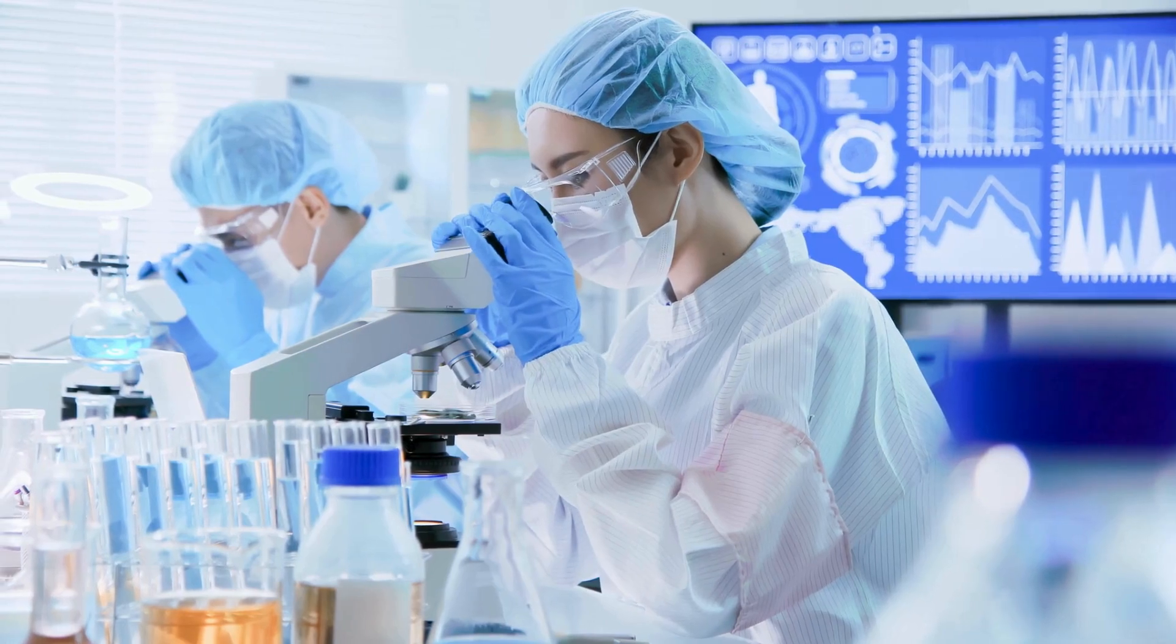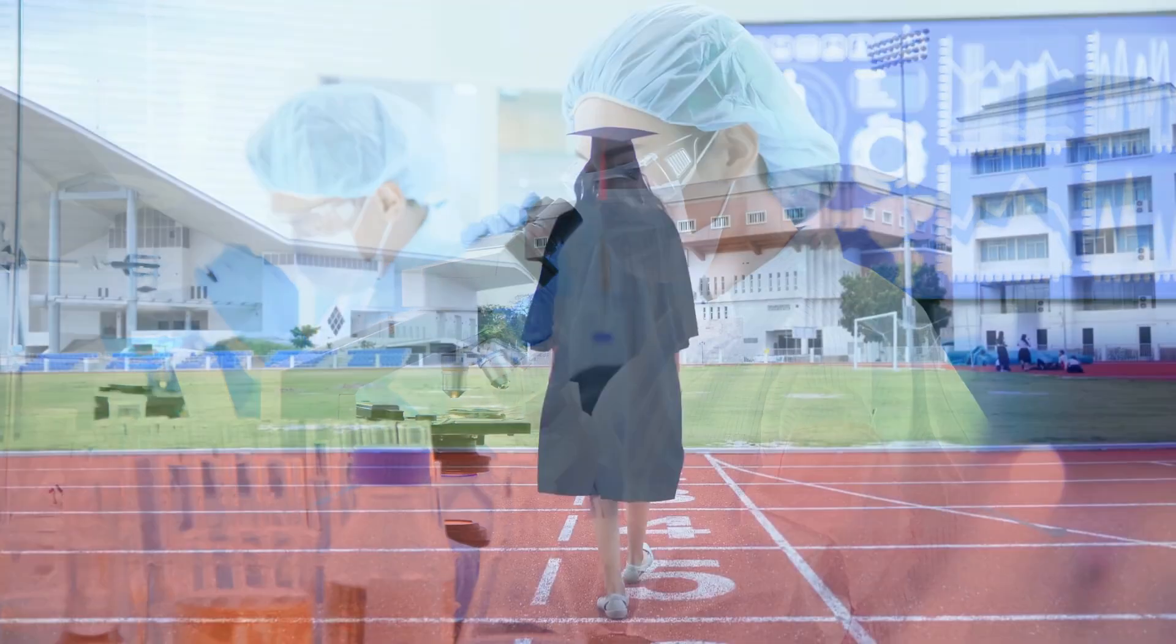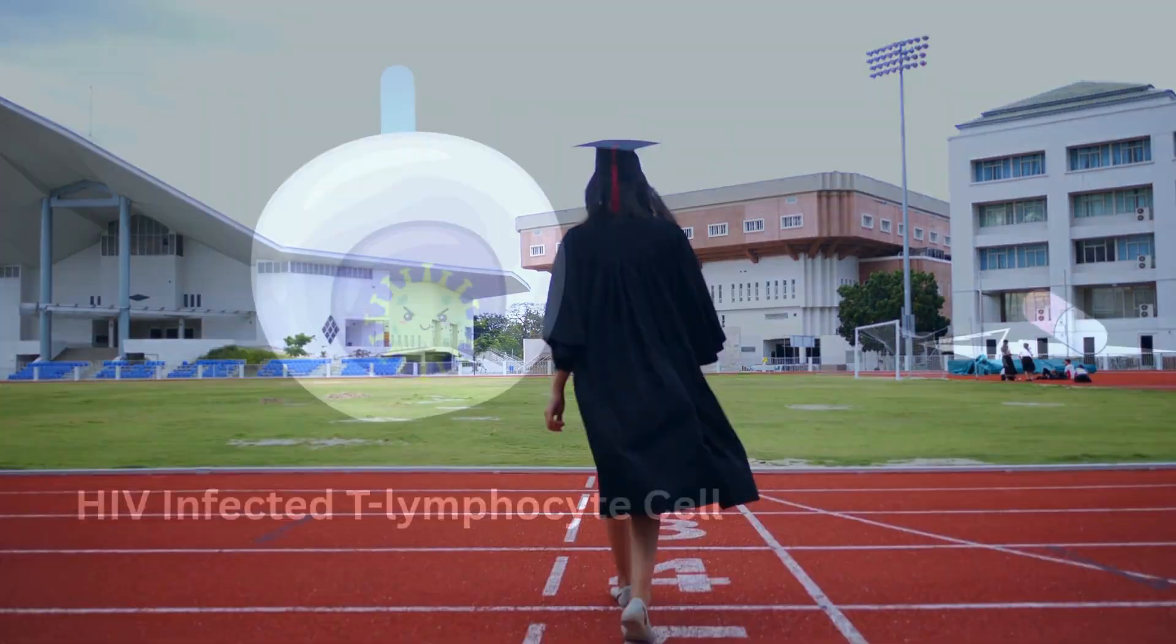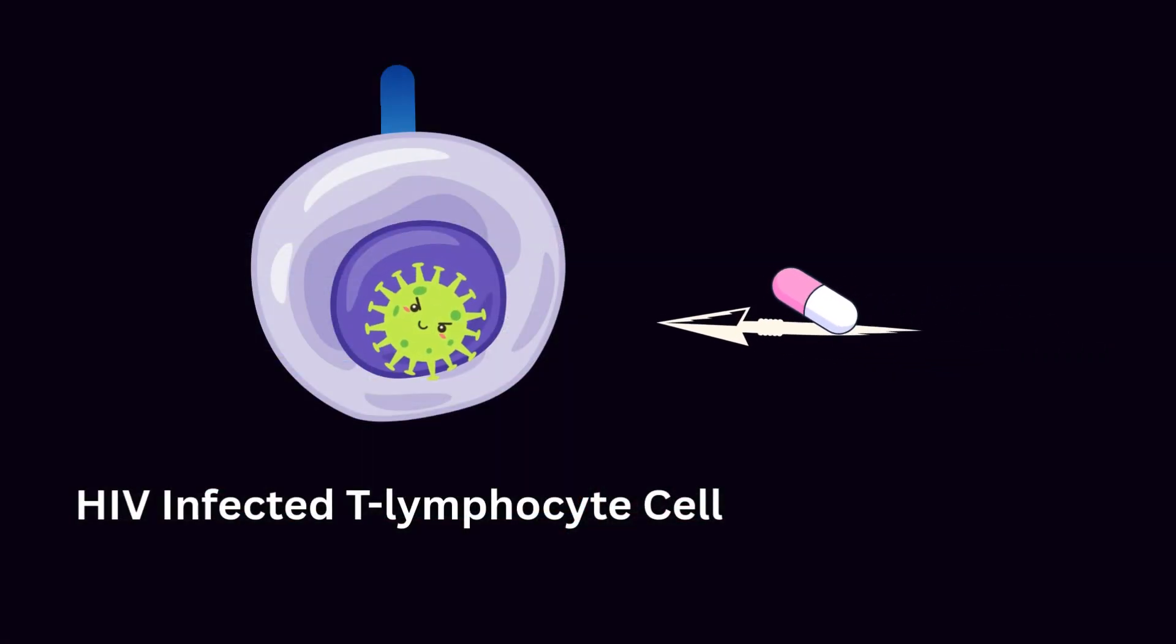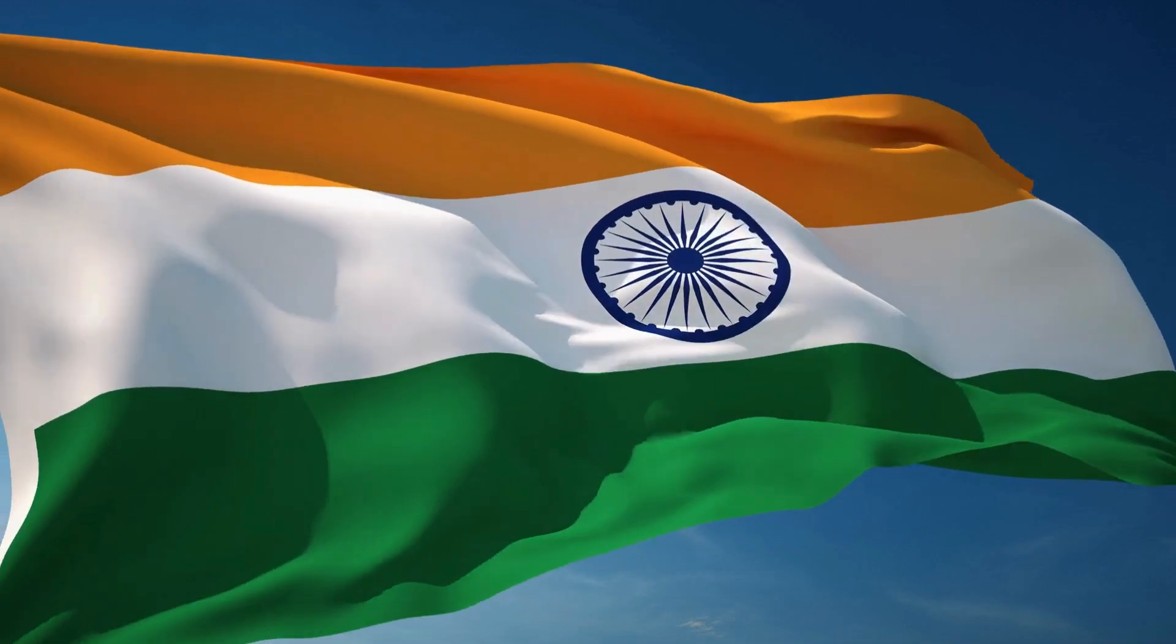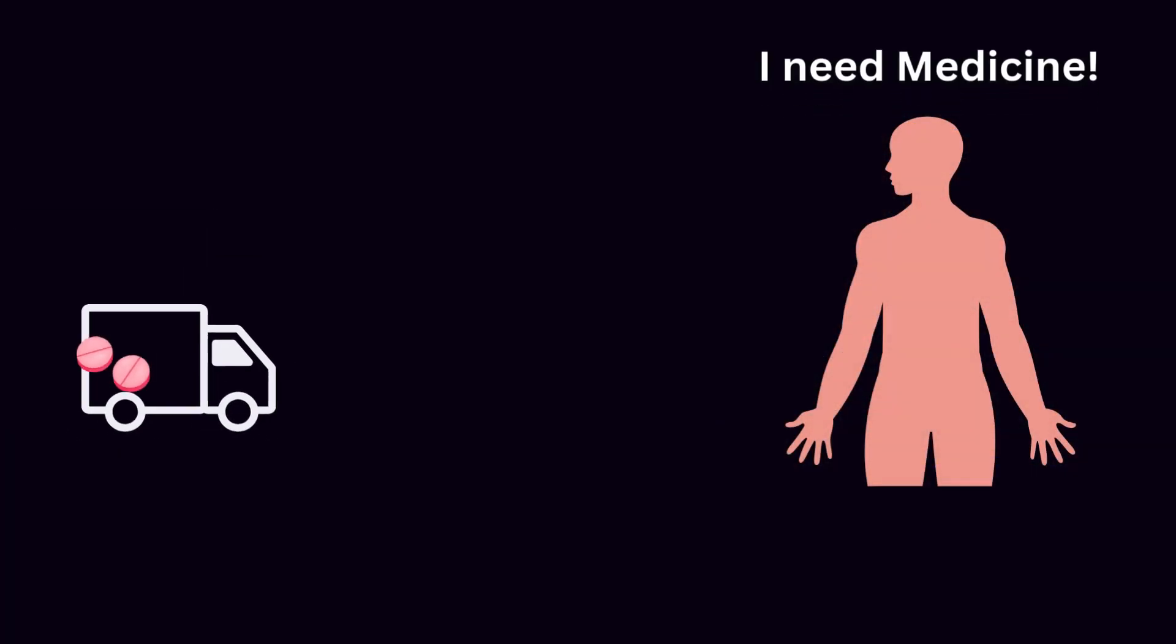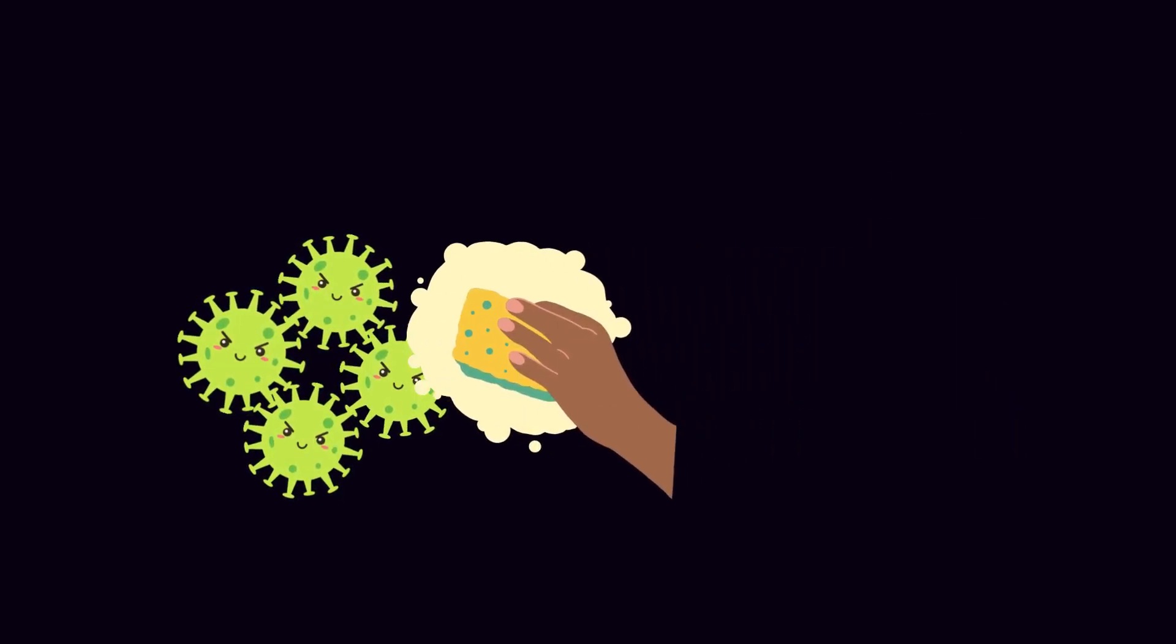Fewer doses mean less chance of missed treatments and less opportunity for the virus to rebound. Who's developing it? Research teams around the world are experimenting with this idea. At the University of North Carolina, scientists have built nanoparticles that deliver antiretroviral drugs directly to immune cells. In India, researchers have created gold-based nanoparticles that act like nanosponges, soaking up HIV proteins.